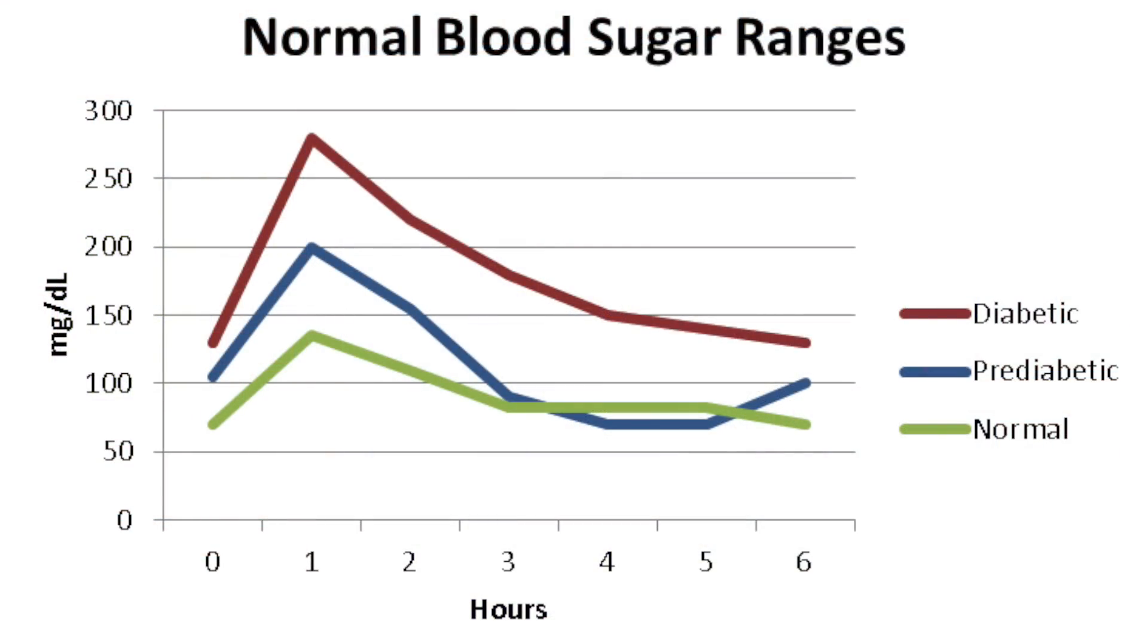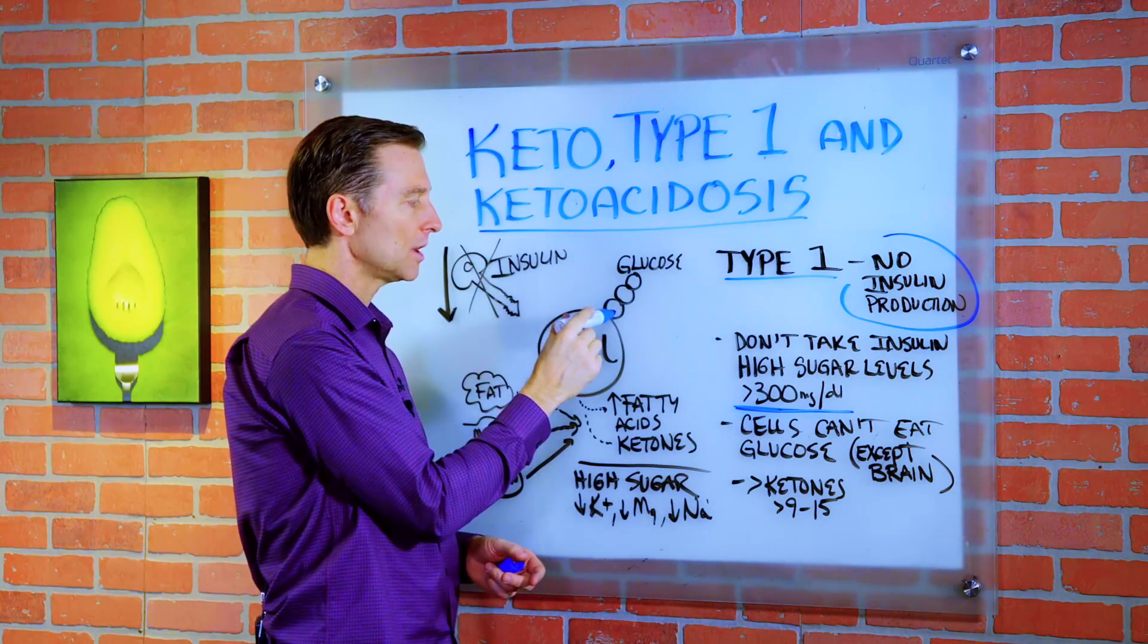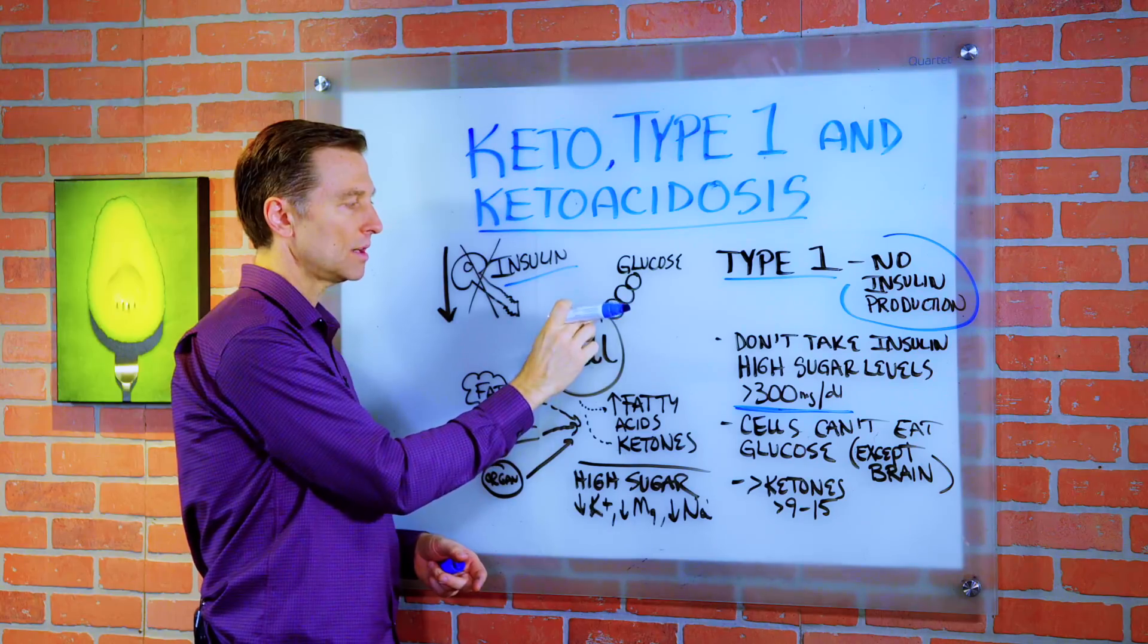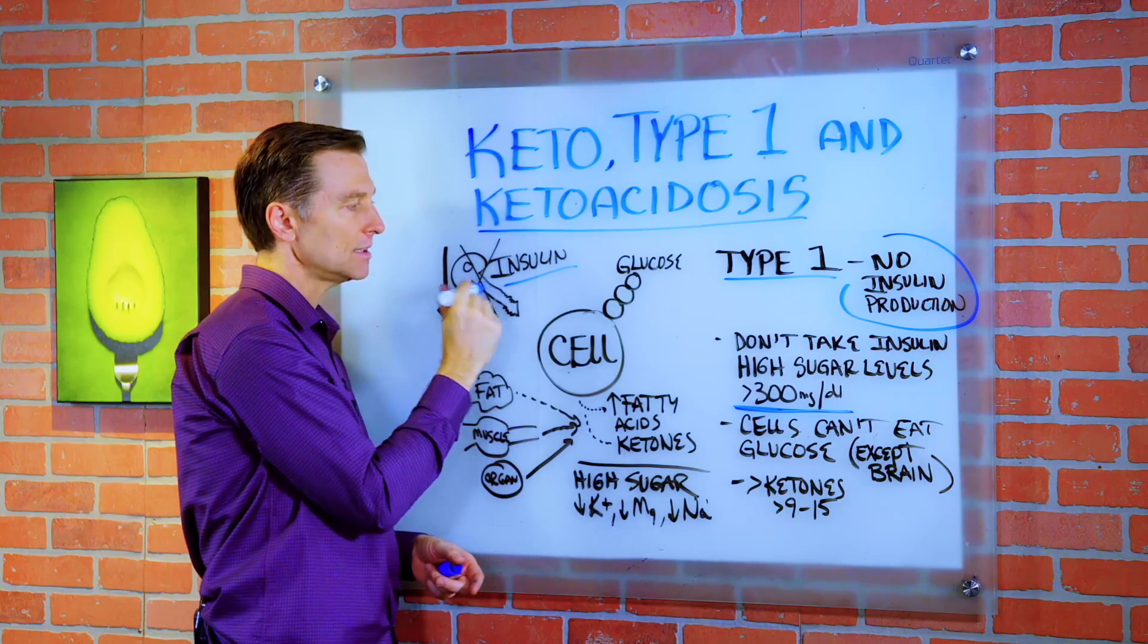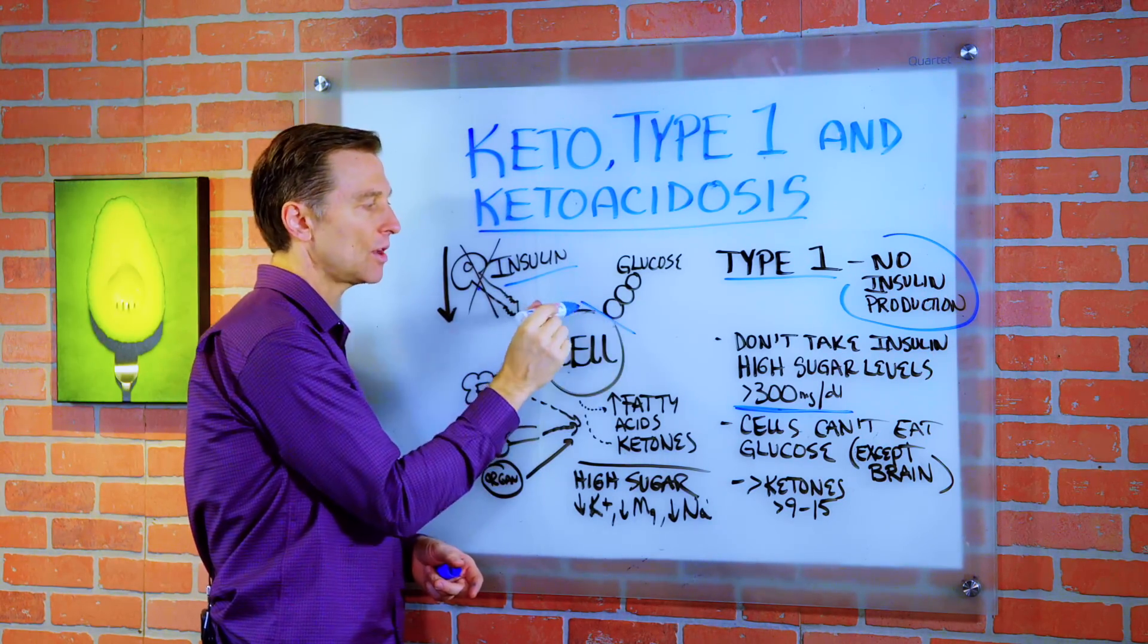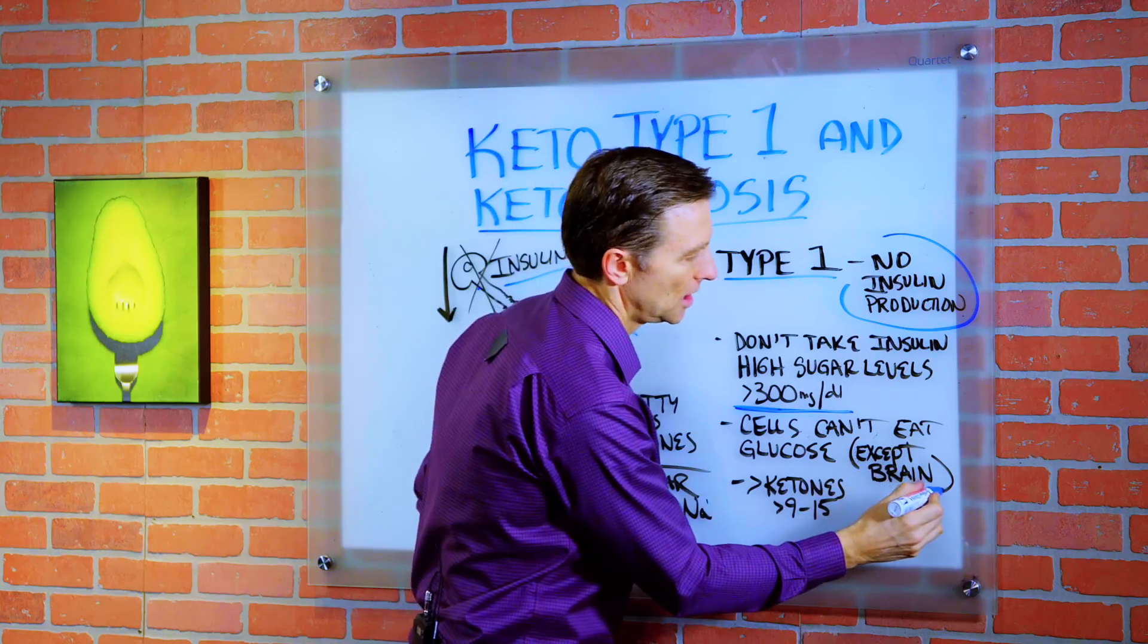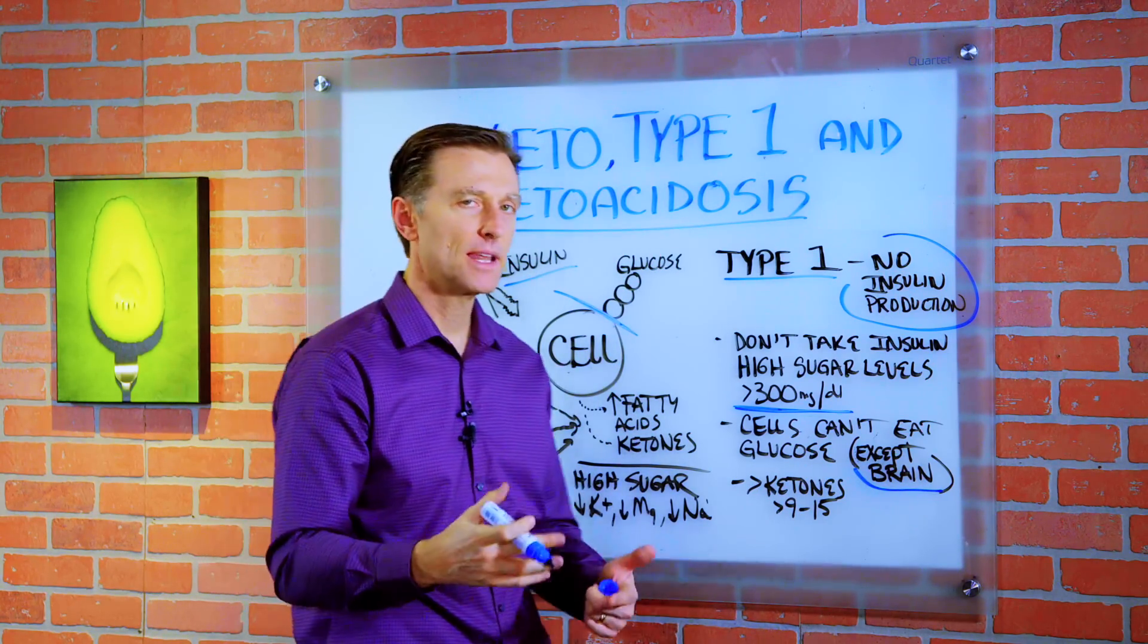So when you have this high sugar and no insulin, you can't absorb the glucose because insulin is like the key that opens the door to allow the glucose to go in the cell. No insulin, that glucose can't get in. Now, an exception, your brain. Your brain can absorb glucose because it's not dependent on insulin.